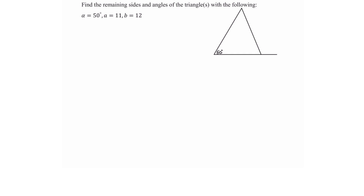Here I have two sides and an angle, and I also have angle alpha and side a, so I have an opposite pair where the side is opposite the angle I have. For the diagram, convention is to start with a horizontal — we don't know the length of that side — then draw our given angle of 50 degrees. Side a goes opposite angle alpha, and b is the adjacent side to the 50 degrees.